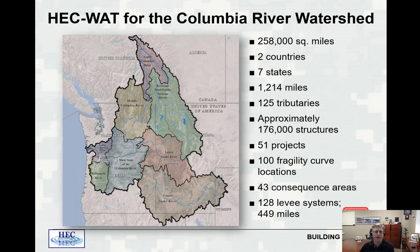This particular study's purpose is to support the Columbia River Treaty study, which is a joint study between Canada and the U.S. to determine whether to continue with the treaty as is, modify the treaty, or stop the treaty entirely. The WAT model is being used to help perform that study.